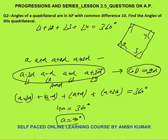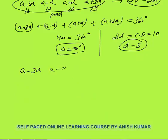So a = 90 degrees. The common difference given is 10, but remember the common difference here is 2d, not d. So 2d = 10 means d = 5. Substituting: the four angles are 90−15=75, 90−5=85, 90+5=95, and 90+15=105 degrees.